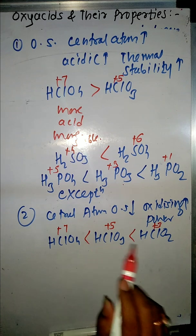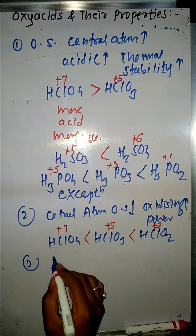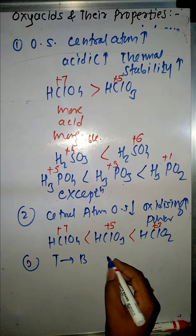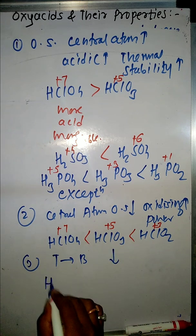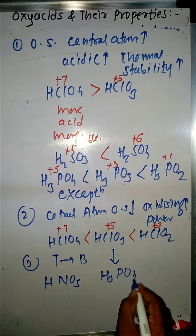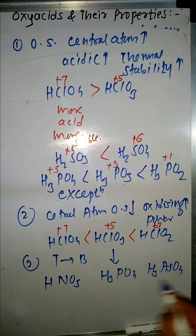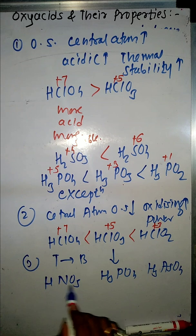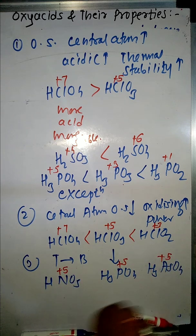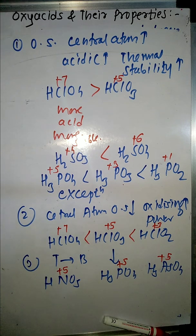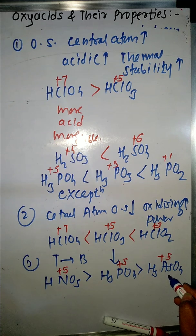Oxidizing nature is always opposite to acidic character and thermal stability — that you have to remember. Property 3: On moving from top to bottom in a group, the acidic character of oxy acids with the same oxidation state will decrease. For example, HNO3, H3PO4, and H3AsO4 — nitrogen, phosphorus, and arsenic are in the same group. The oxidation state of the central atom is +5 in all cases. Since nitrogen is more electronegative than phosphorus and arsenic, HNO3 is the most acidic, followed by H3PO4, then H3AsO4.